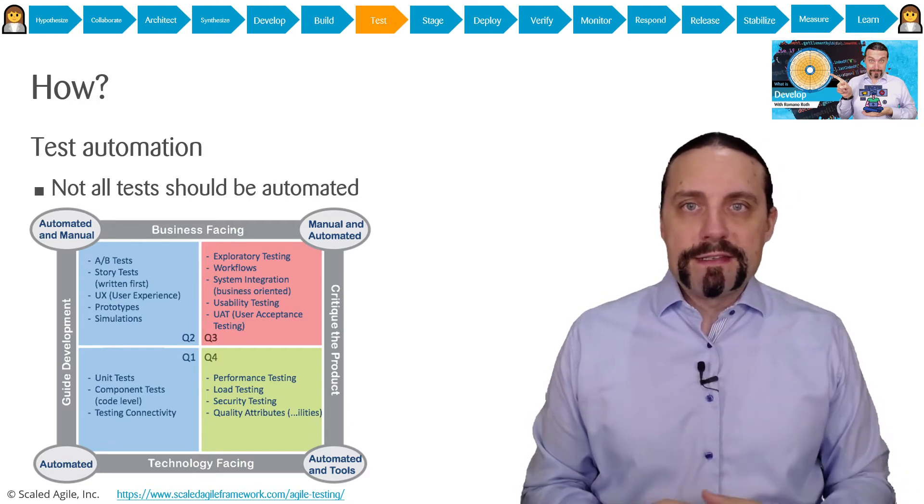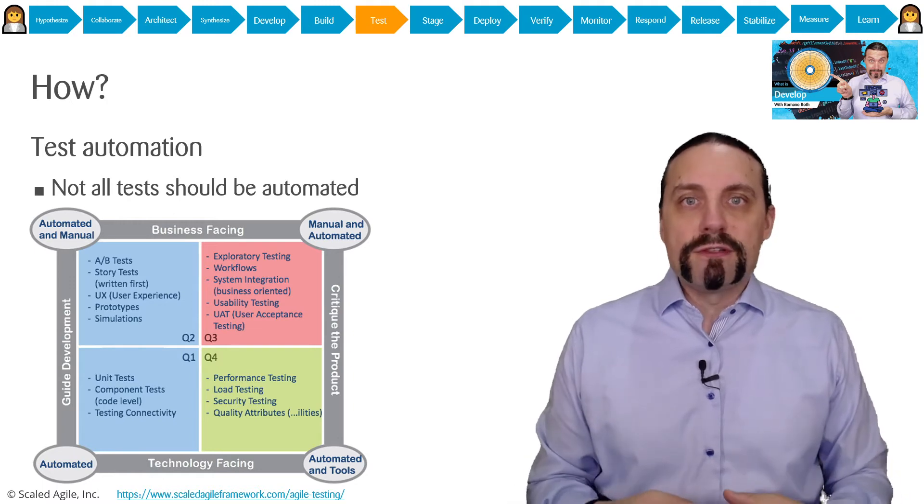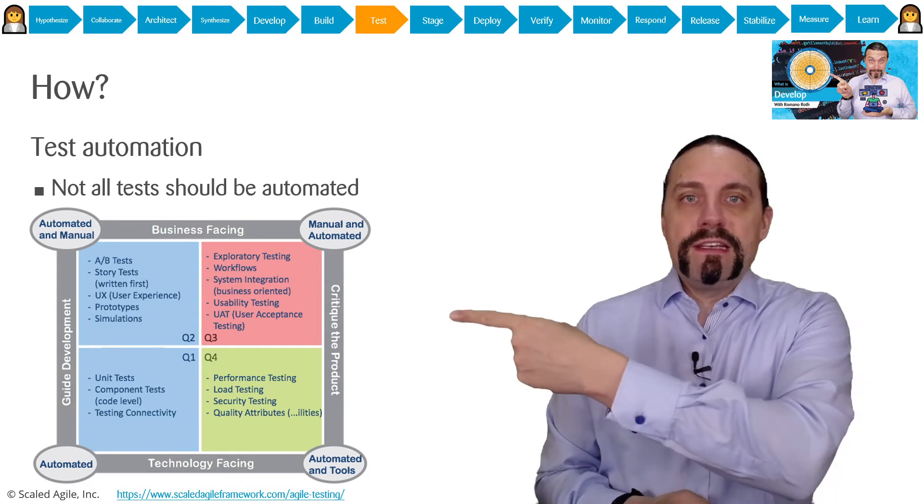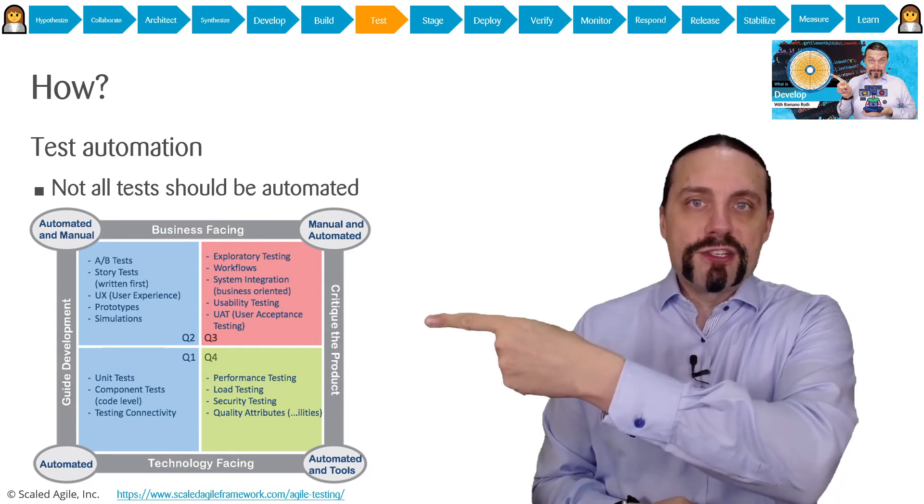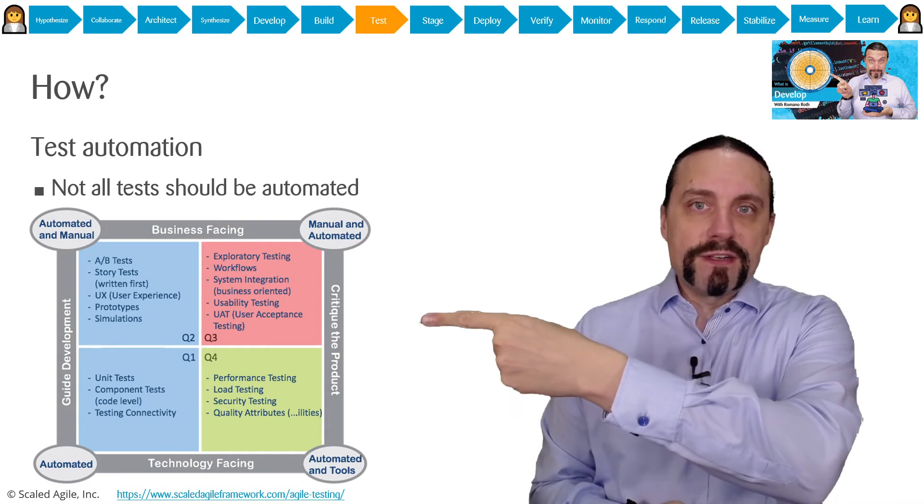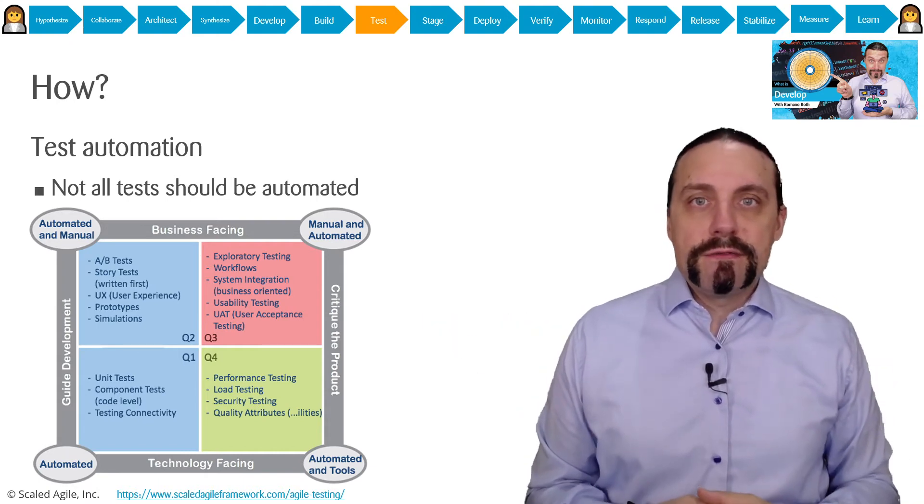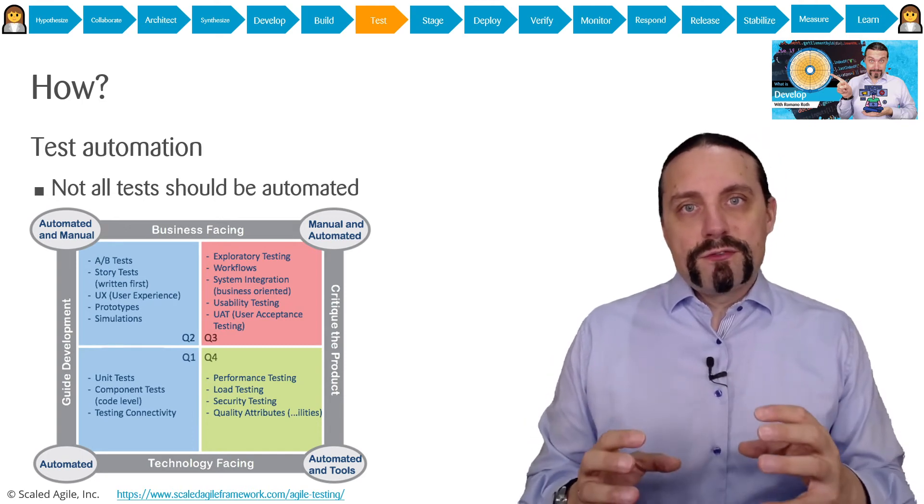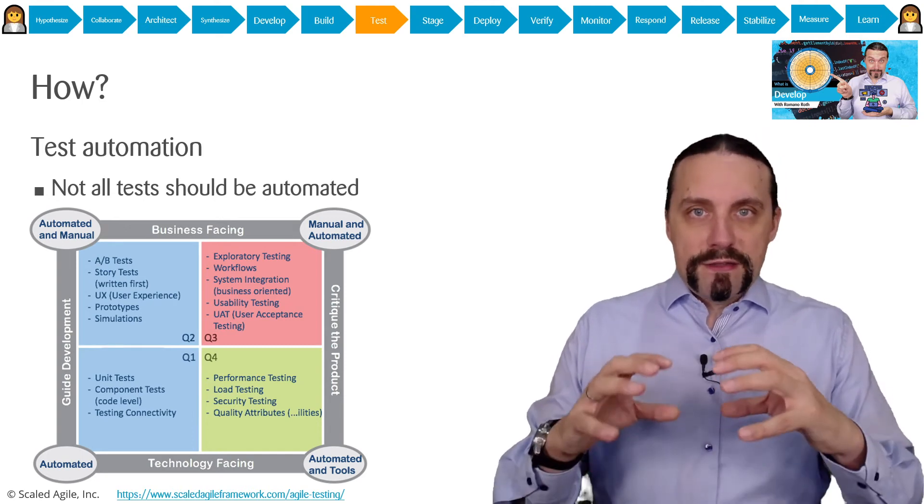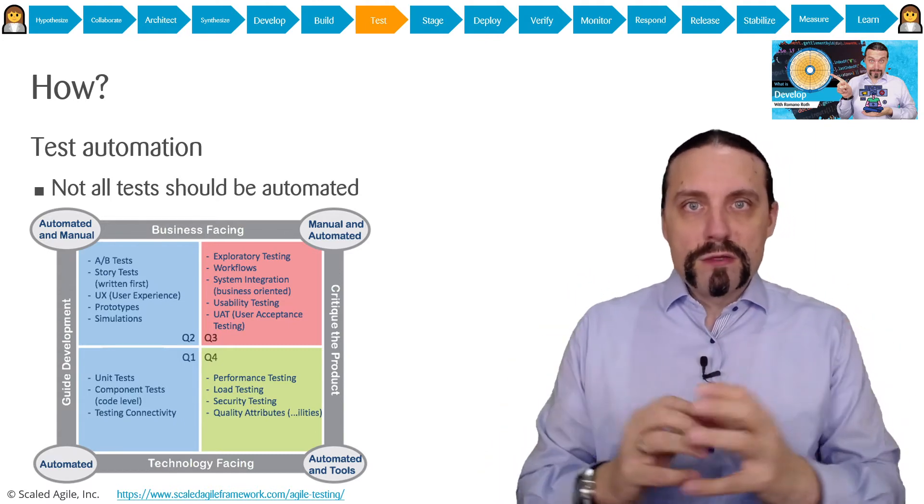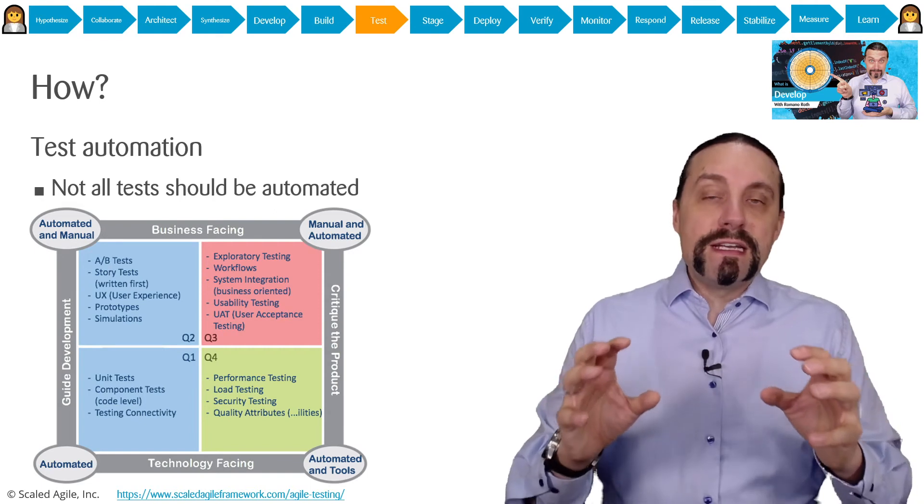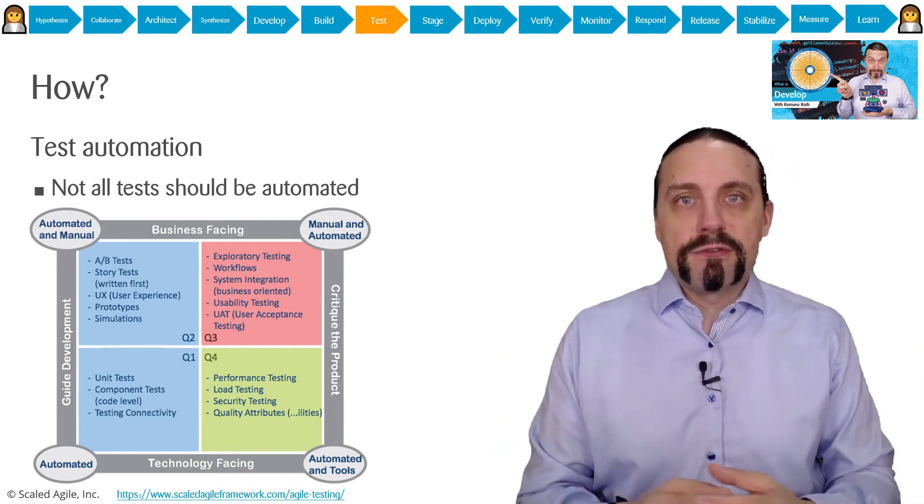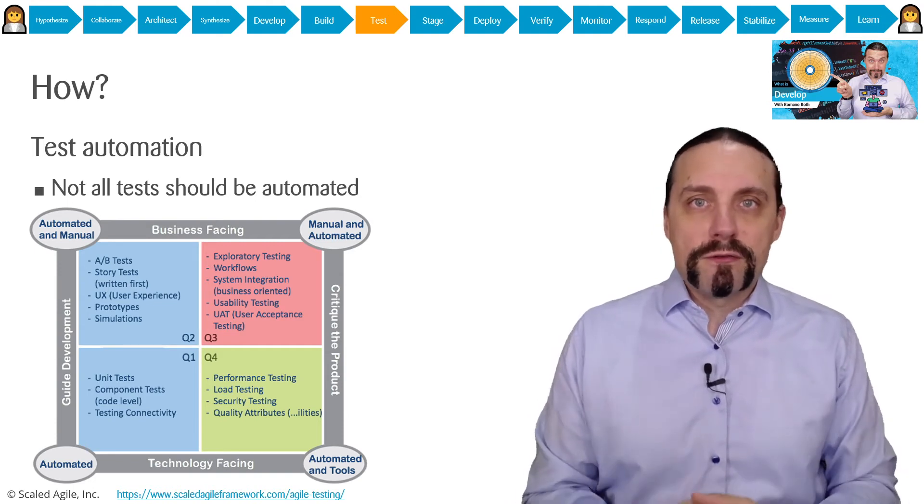The acceptance tests in this area are executed preferably automated. Now we move left into area Q3 in the agile test matrix. In this area we execute system level acceptance tests. There we want to validate the behavior of the whole system and this also includes other systems.